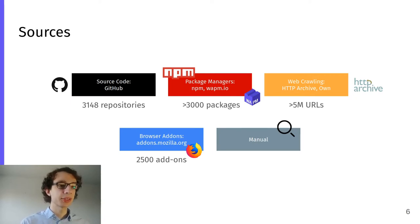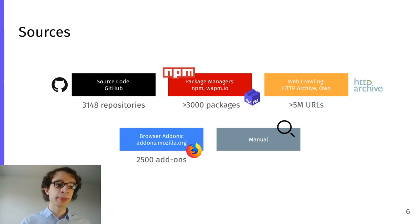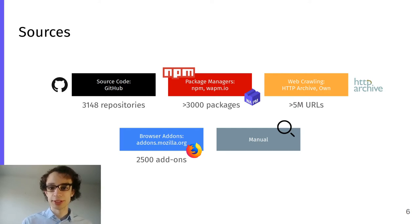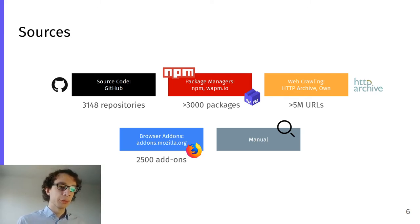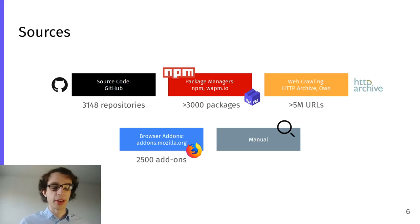In this slide you can see some of the sources we considered. First, we searched on GitHub for repositories related to WebAssembly and looked through over 3,000 repositories to search for binaries. We also looked at package managers like npm and wapm.io, which is a WebAssembly package manager. We did web crawling via two approaches: querying HTTP Archive, which crawls more than 5 million URLs monthly, and doing our own crawling of the top 1 million URLs and lists of websites related to WebAssembly. We also looked at the top 2,500 browser add-ons for Firefox, and did some manual search among other sources.